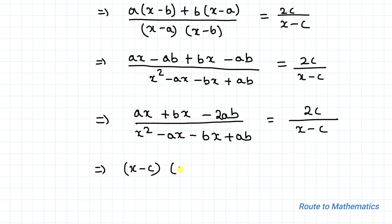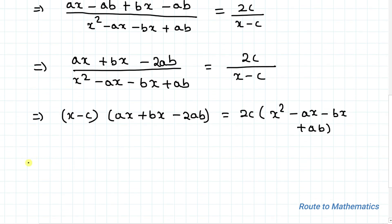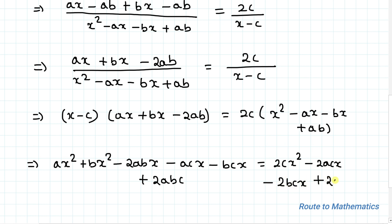Now doing cross multiplication: (x−c)(ax + bx − 2ab) = 2c(x² − ax − bx + ab). Expanding each term: ax² + bx² − 2abx − acx − bcx + 2abc = 2cx² − 2acx − 2bcx + 2abc. The 2abc terms cancel out from both sides.